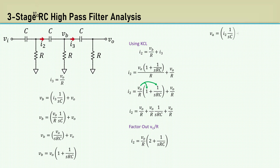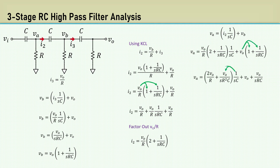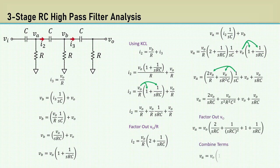Then we can say V_A equals I_2 times 1 over SC plus V_B. Substituting the expressions for I_2 and V_B. Distributing V_0. Then distributing 1 over SC. Then factor out V_0 and combine terms.